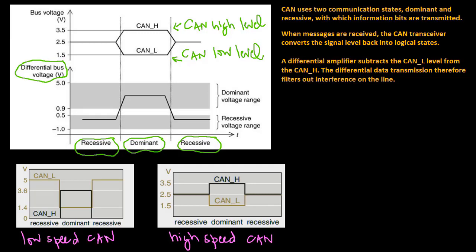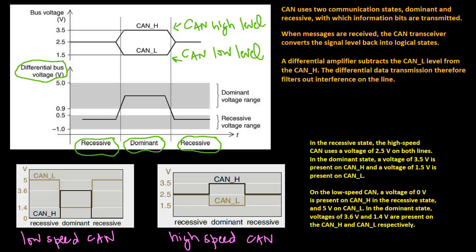High-speed and low-speed CANs use different voltage levels to transmit dominant and recessive states. In the recessive state, the high-speed CAN uses a voltage of 2.5 volts on both lines. In the dominant state, a voltage of 3.5 volts is present on CAN high.